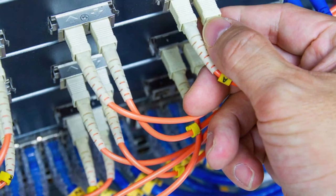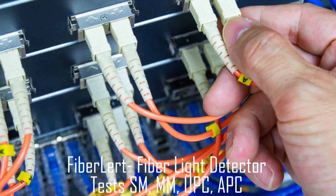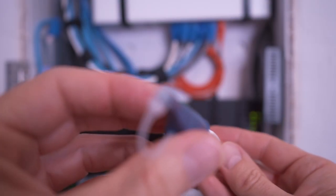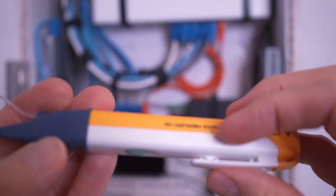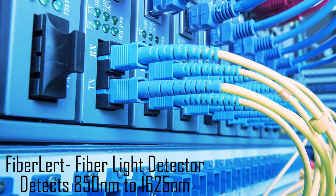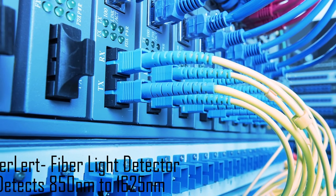So, you can test single mode or multi-mode fiber, UPC and APC as well. So, that's it. Very cool. And the fiber alert can detect from 850 nanometers to 1625 nanometers.